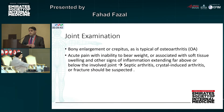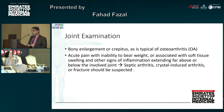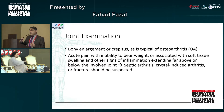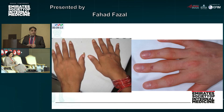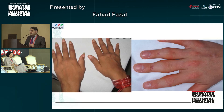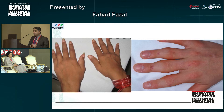Bony enlargement or crepitus is another part of joint examination, usually seen in osteoarthritis. Acute pain with inability to weight bear or associated with soft tissue swelling and other signs of inflammation extending far above or below the joint line can be septic arthritis, crystal-induced arthritis, or fracture. You can see here two different pictures: the one on the right shows obvious swelling of the proximal interphalangeal joints, whereas the picture on the left may appear normal but actually shows swelling of both wrists, the proximal interphalangeal joints, and the metacarpophalangeal joints.